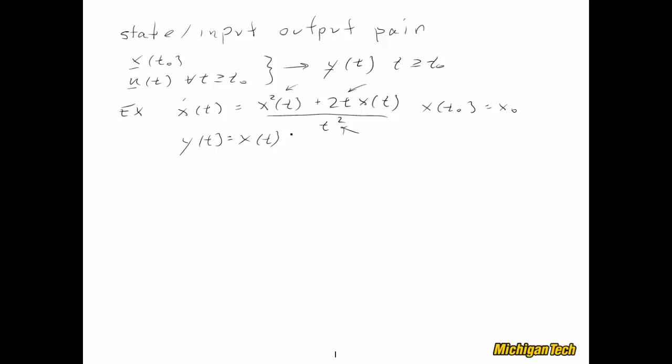Now it turns out that this nonlinear differential equation has a closed form solution. In particular, y(t), which is equal to x(t), is equal to x0 t squared divided by t0 squared minus x0 times the quantity t minus t0. Well, now let's go ahead and look at homogeneity and additivity and see if it satisfies either of those two properties.